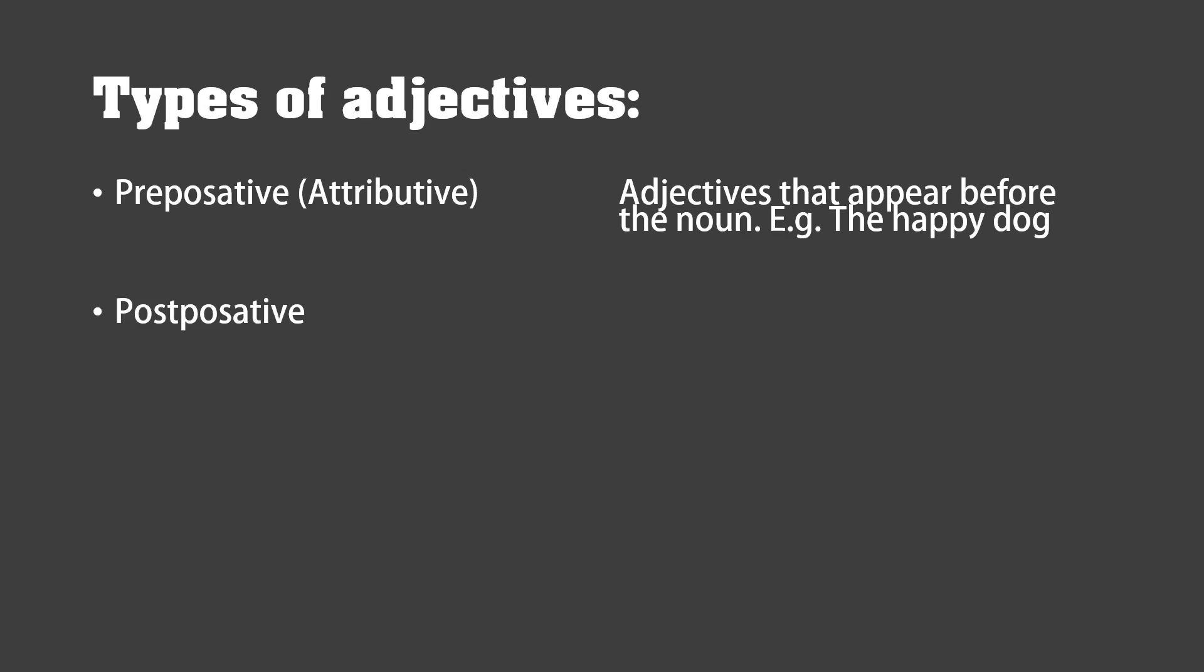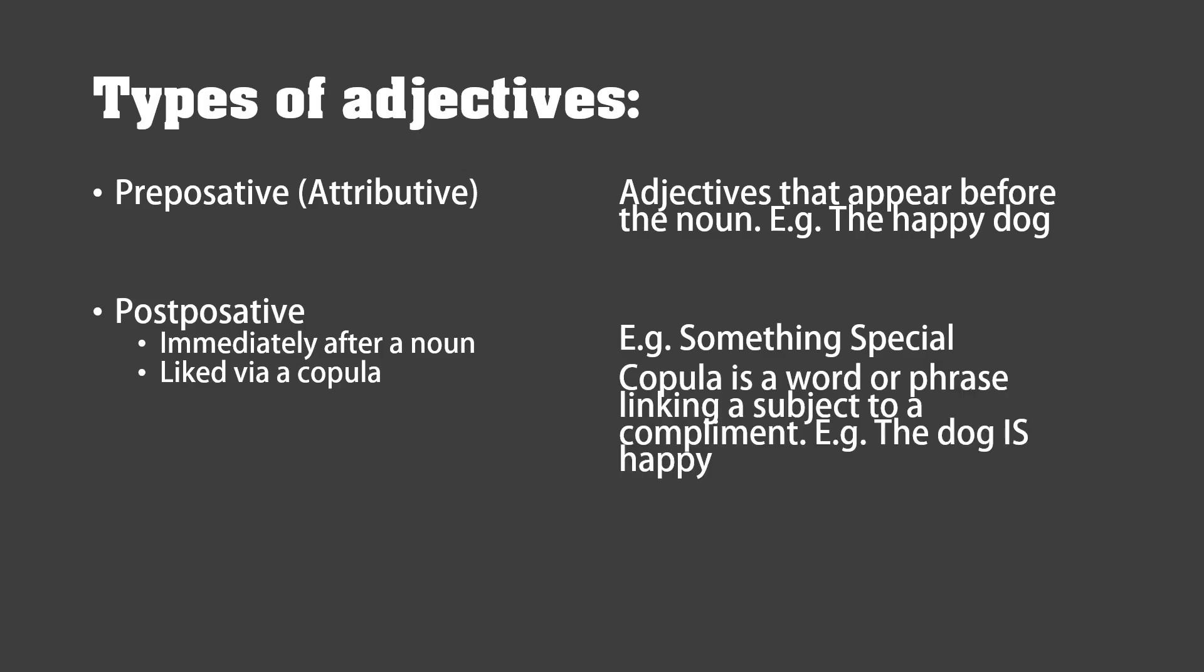There are two types of these: one that appears immediately after the noun, such as 'something special,' and another linked via a copula. A copula is a word or phrase linking a subject to its complement, e.g., 'the dog is happy.' The post-positive adjective isn't super common in English; we normally just use attributive, but they are obviously possible as you can see here.